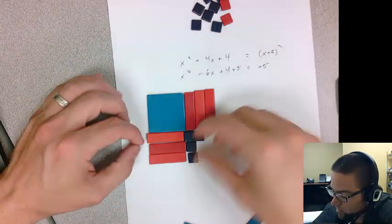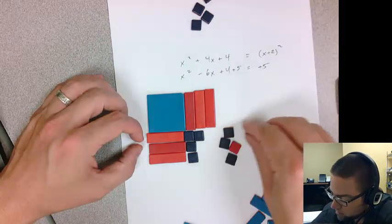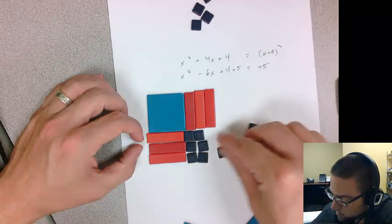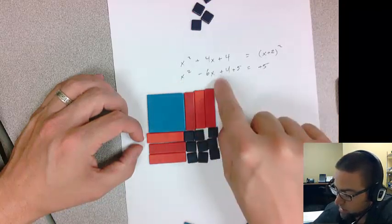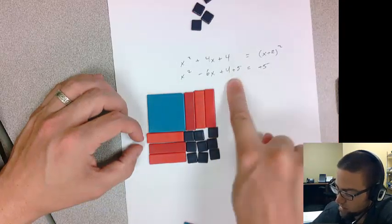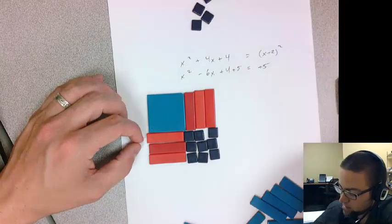And then now I have my perfect square, which is x squared minus 6x plus 9, and that's equivalent to